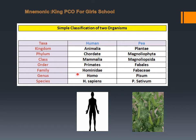Then family Hominidae — hominidae are characterized on the basis of flat faces and three-dimensional vision. Then genus: primates with upright posture and large brains are grouped into genus Homo. Then species: the species is Homo sapiens. Now, classification of pea.